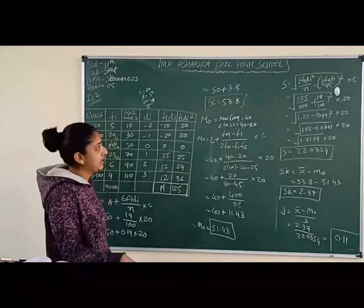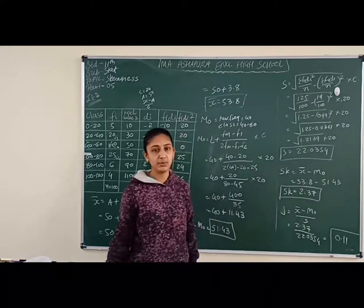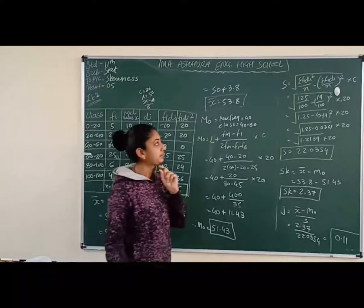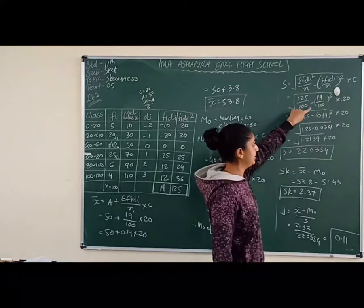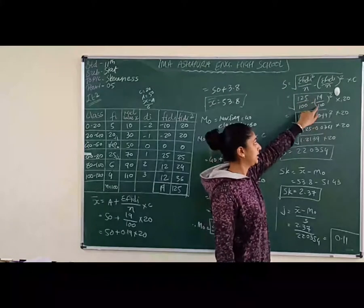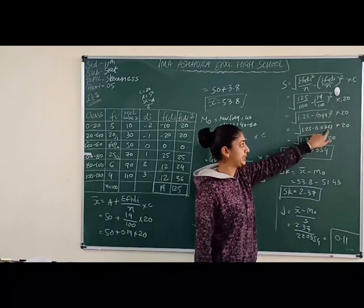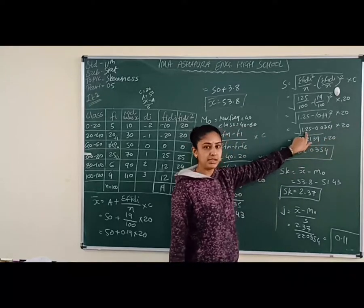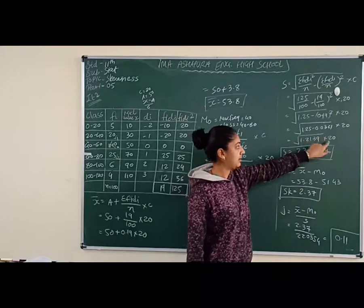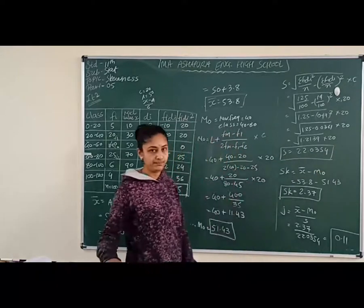To find the coefficient, we need standard deviation. S = √[(ΣFiDi²/n) − (ΣFiDi/n)²] × c = √[(125/100) − (19/100)²] × 20 = √[1.25 − 0.0361] × 20 = √1.2139 × 20 = 1.1018 × 20 ≈ 22.0354.